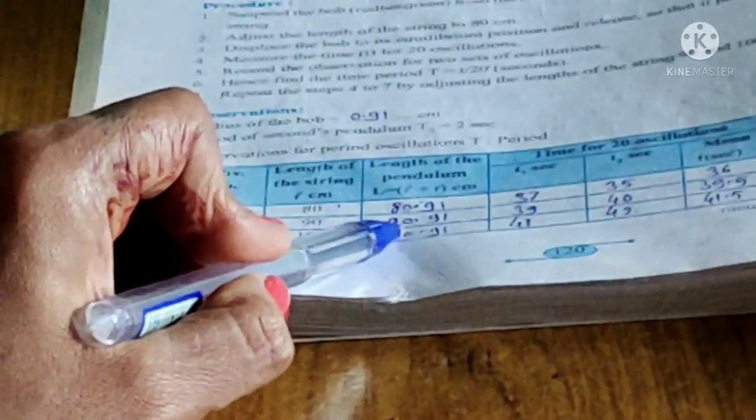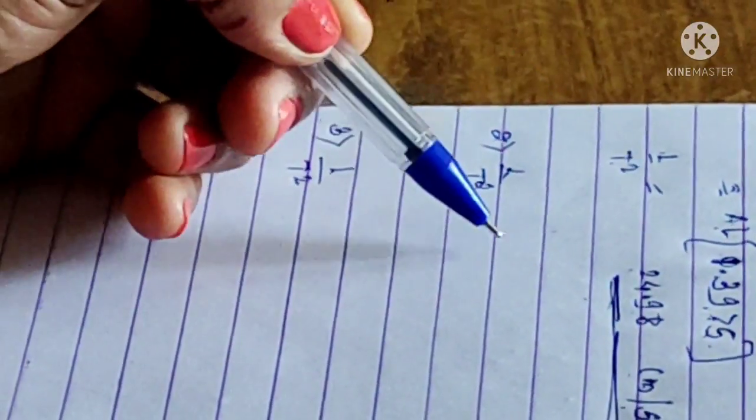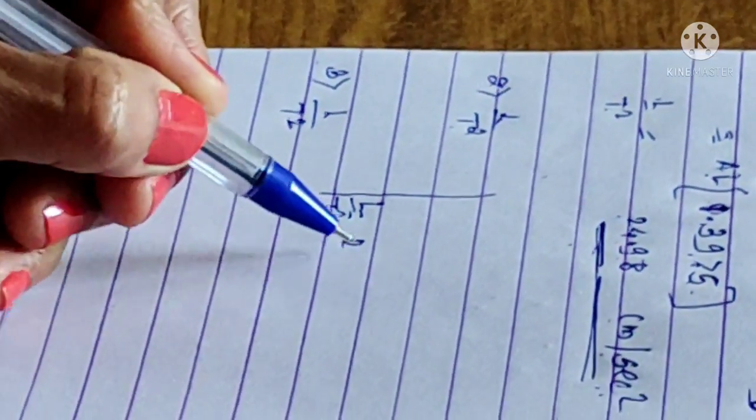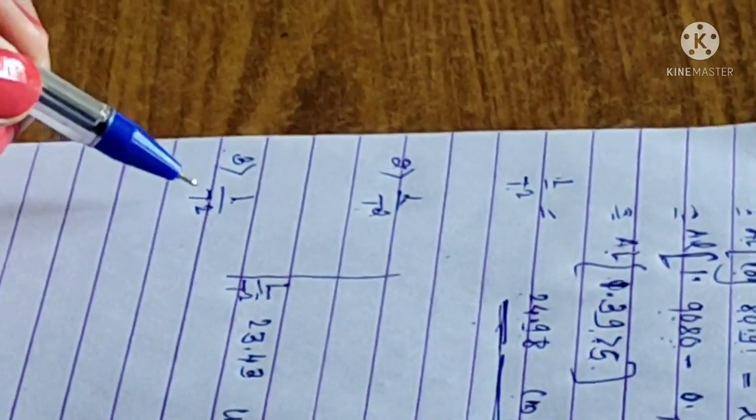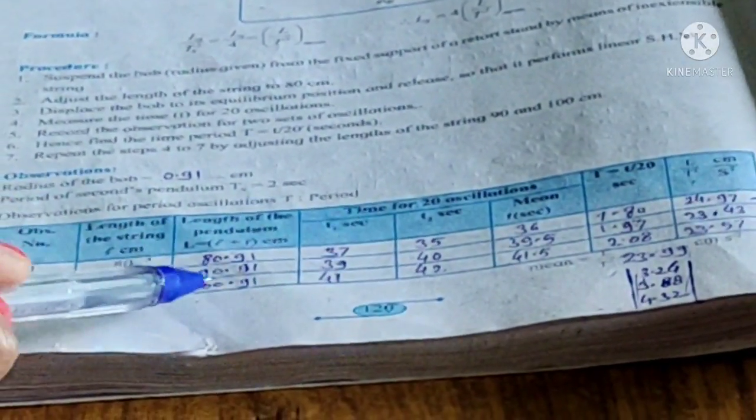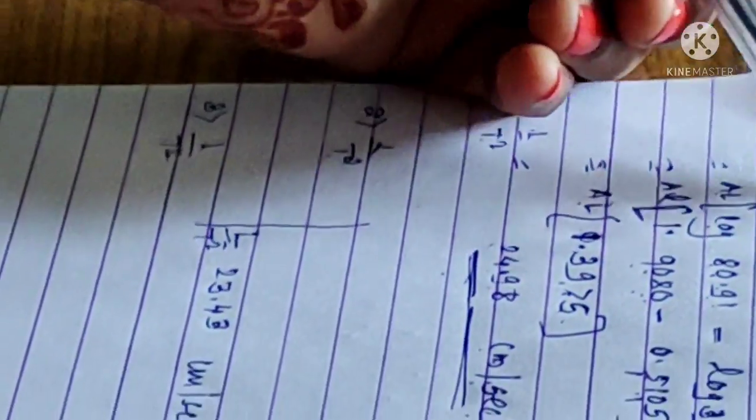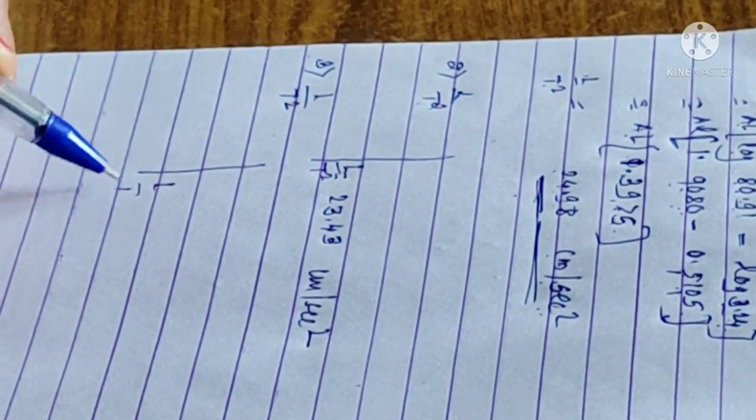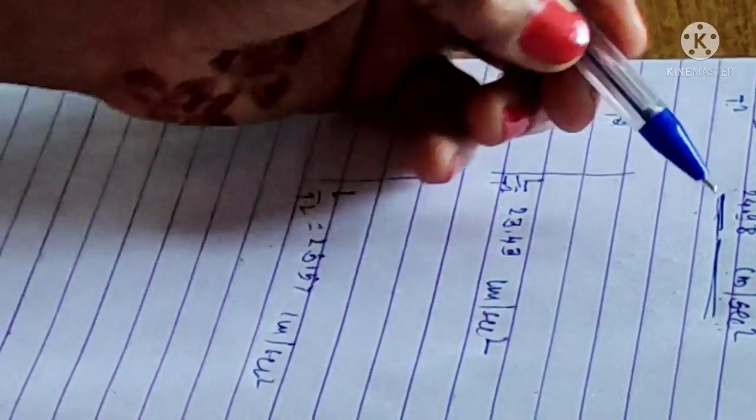Second observation L by T square: the L value divided by corresponding T square value, same calculation steps as the first. The second L by T square is 23.43 cm per second square. Third calculation: 100.91 divided by 4.32, repeat the same steps, and final L by T square is 23.57 cm per second square.